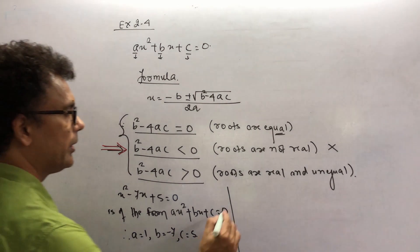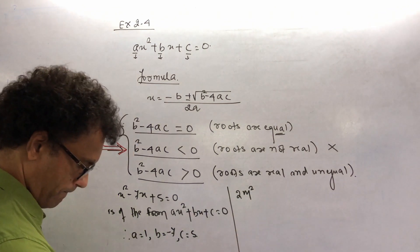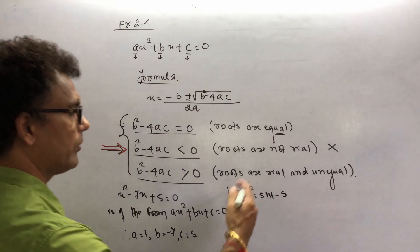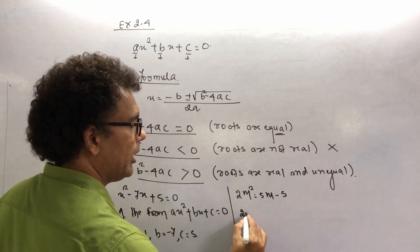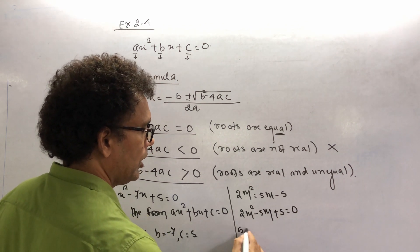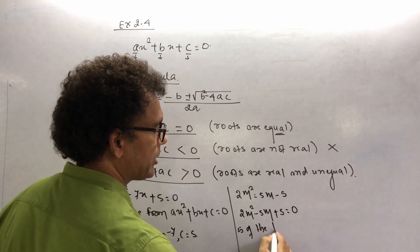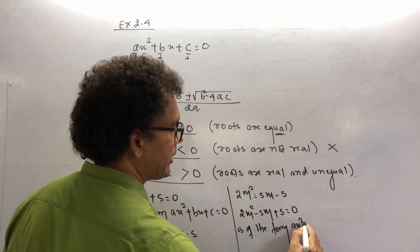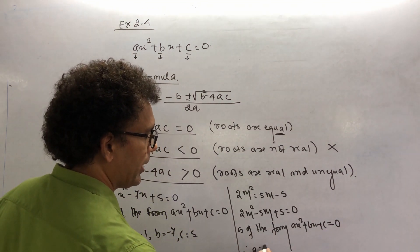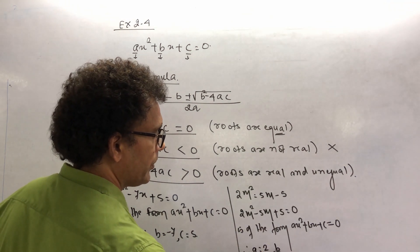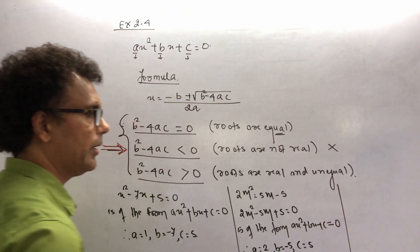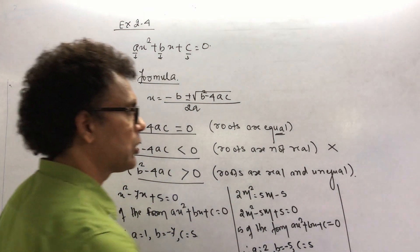The second sum is written as 2m² = 5m − 5, which is not in standard form. Converting it: 2m² − 5m + 5 = 0. Comparing with ax² + bx + c = 0, you get a = 2, b = −5, and c = 5.